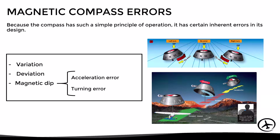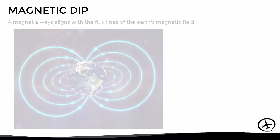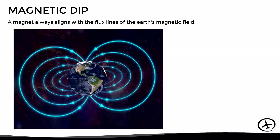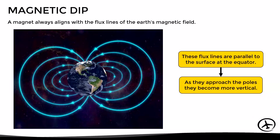In the last video we already talked about variation and deviation, so in this video we will focus on the acceleration error. But before going into detail, let's see what magnetic dip is. As we know, a magnet always aligns with the flux lines of the earth's magnetic field. As we can see in this image, these flux lines are parallel to the surface at the equator, however as they approach the poles they become more vertical.